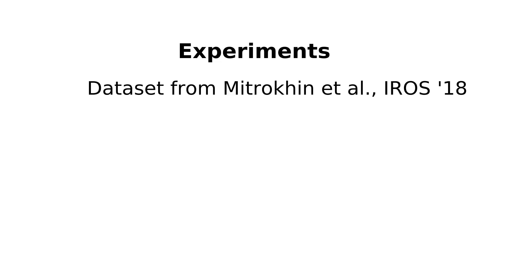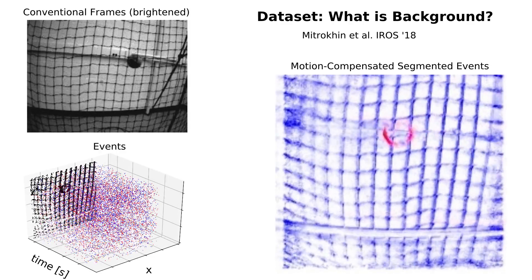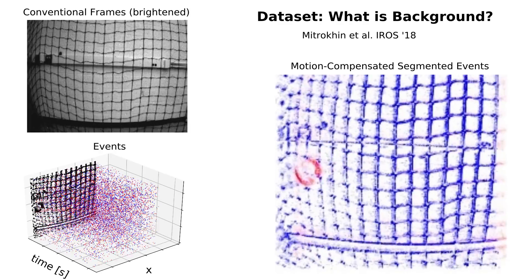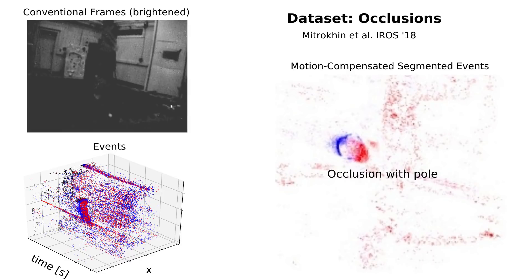Here we show several sequences from the extreme event dataset. This dataset shows challenging sequences of balls being thrown at high speed, or quadrotors flying in near darkness with strobes flashing.